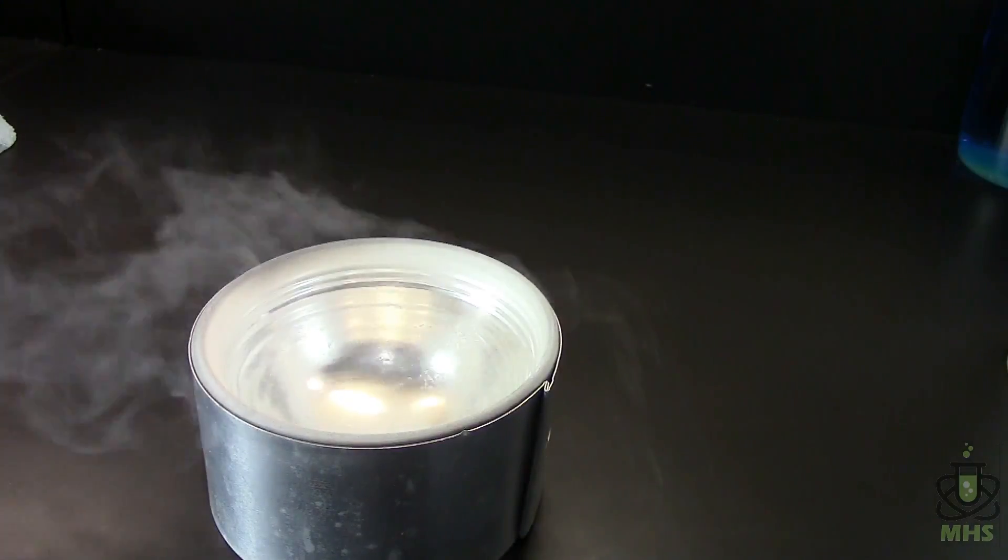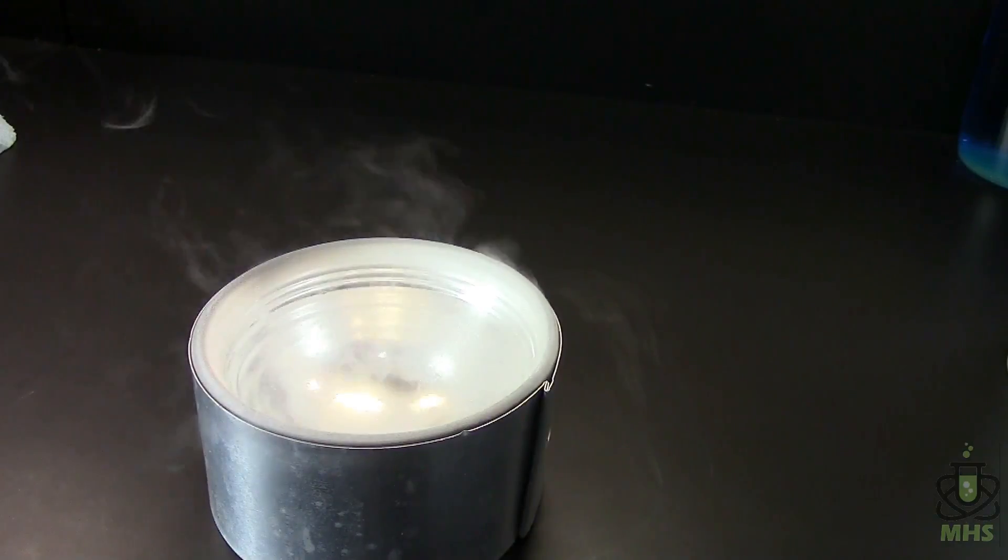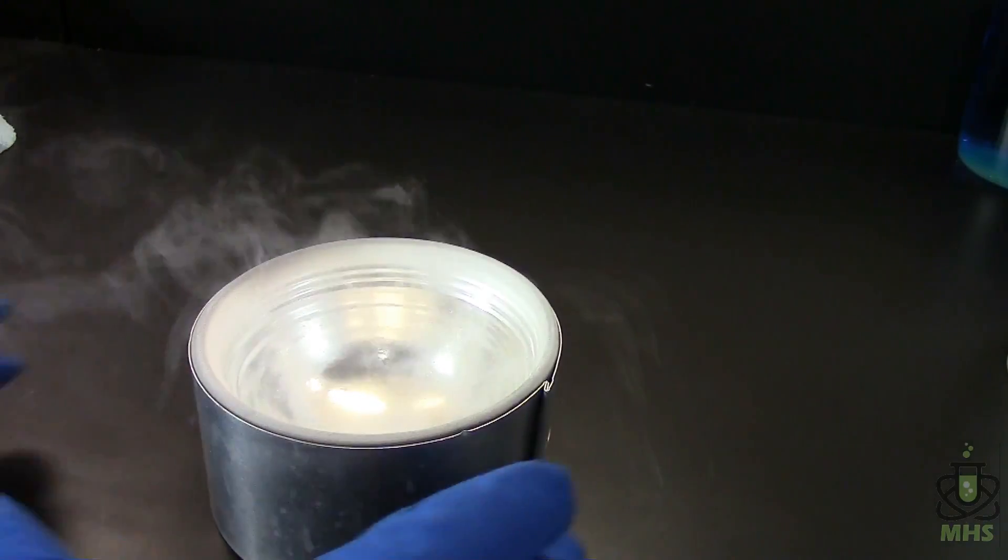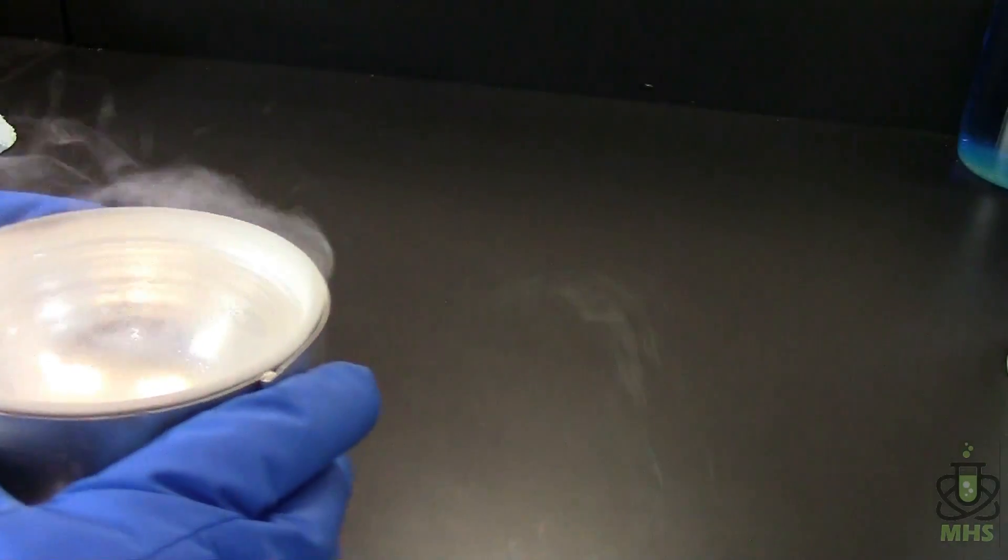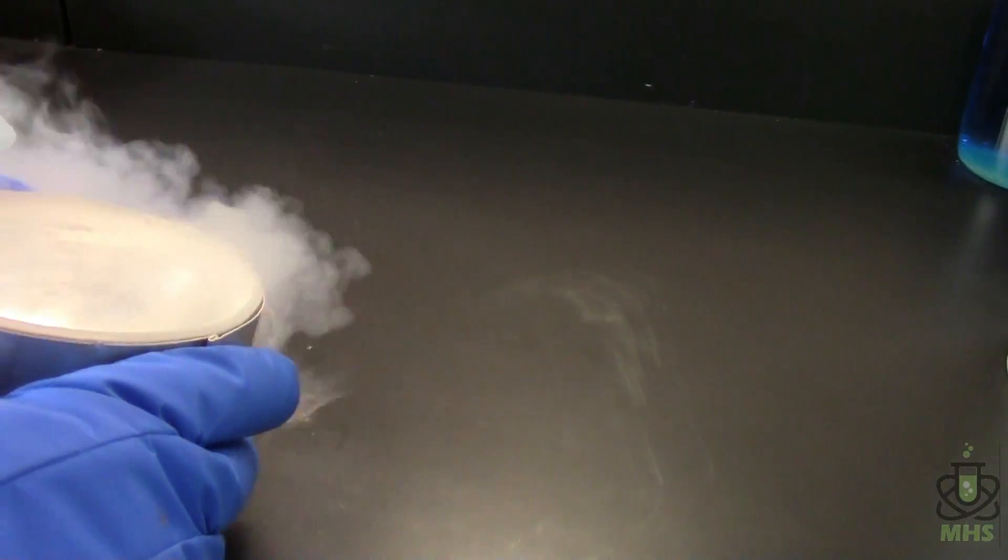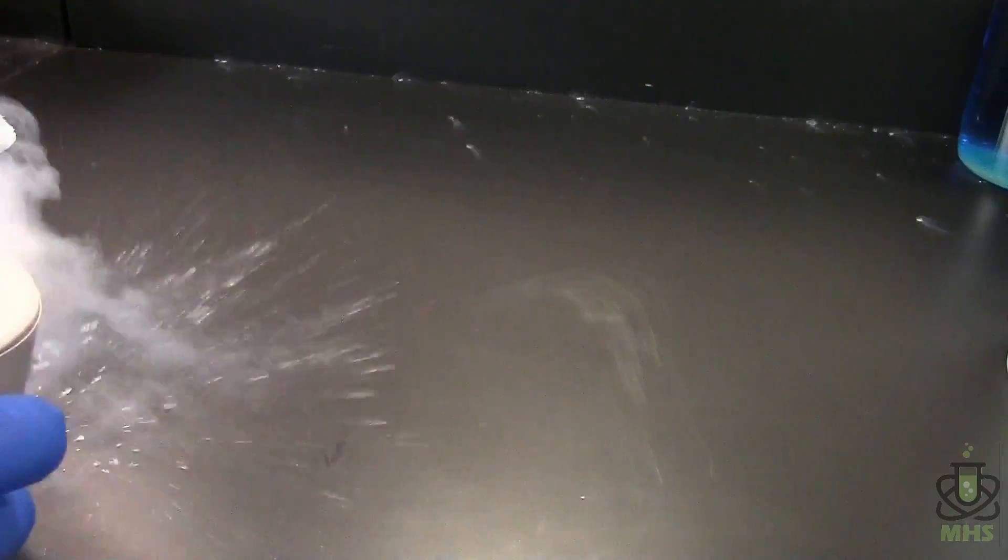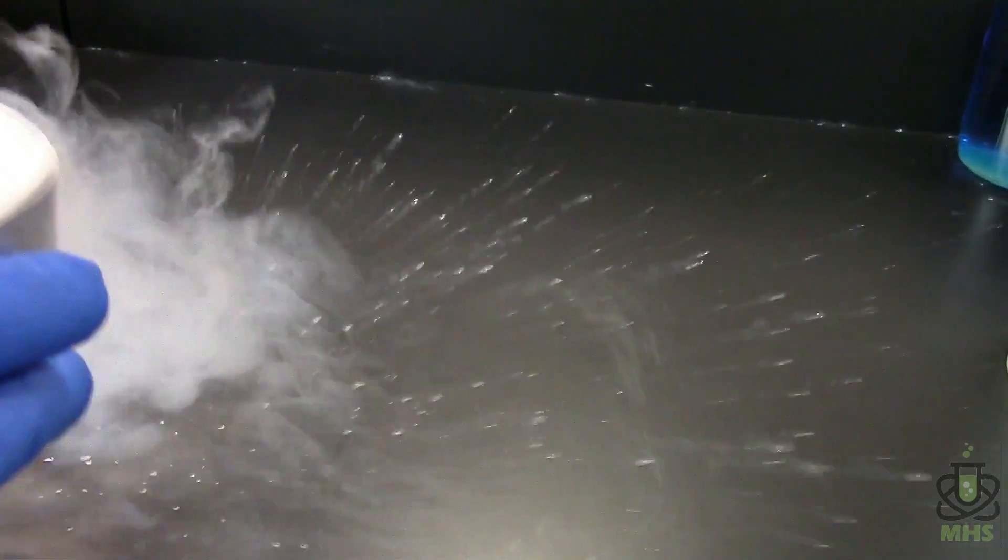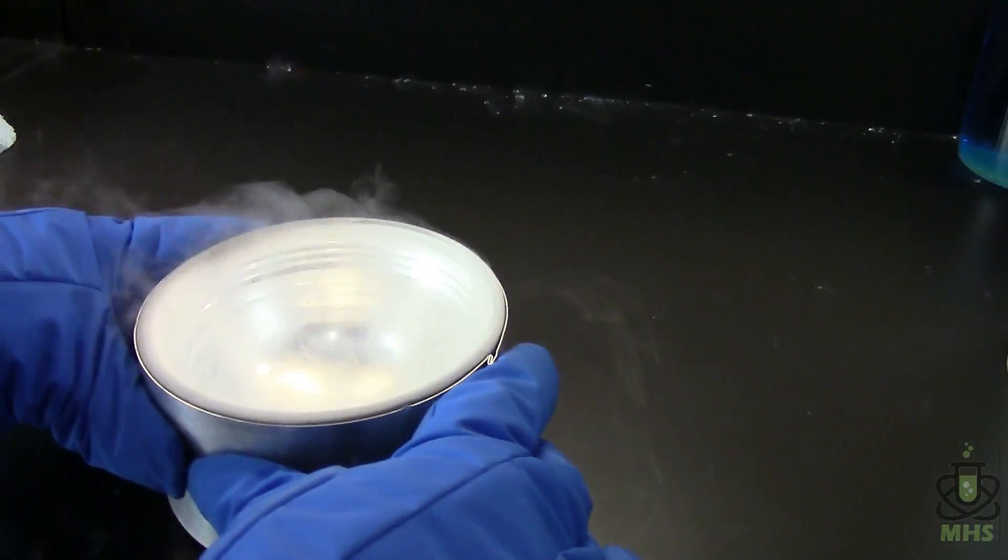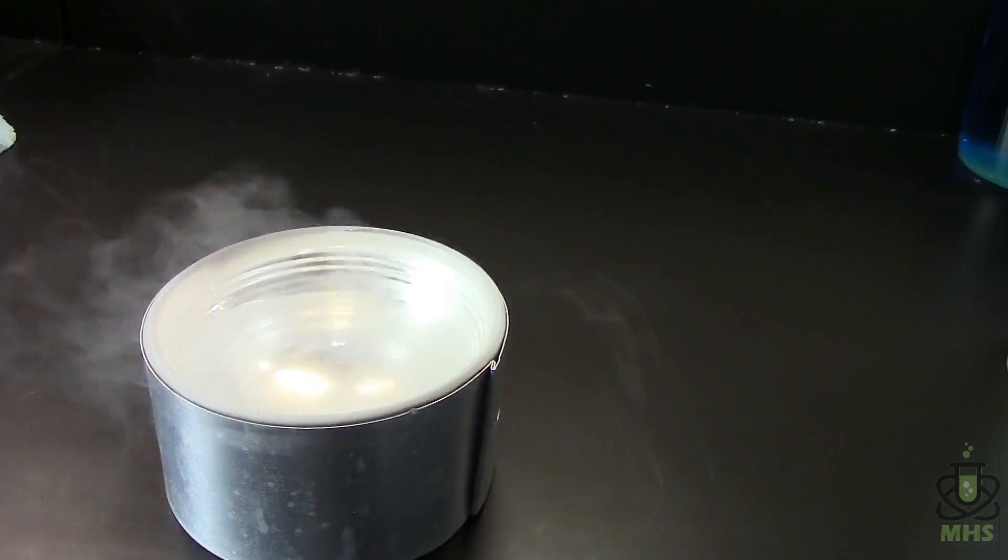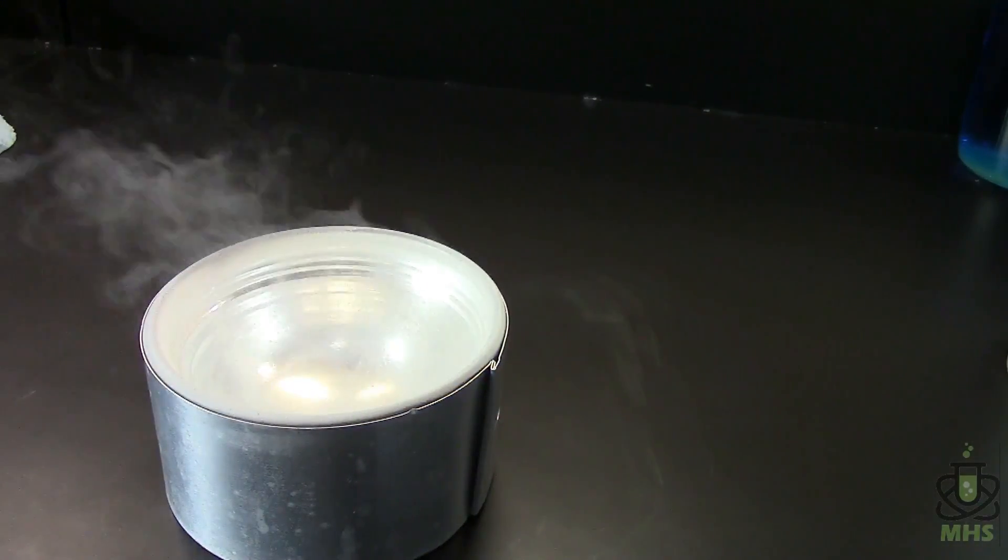Now something you may have noticed when I was pouring this into the small dewar is that it was skating around on the table. Let's try it again and just take a look at what the liquid does. See how it kind of flies around, it skates away, it zips around like it's got no friction. And that's a really cool effect. That's something called the Leidenfrost effect. So the Leidenfrost effect happens when a very cold liquid touches a very hot surface.